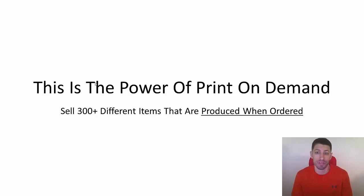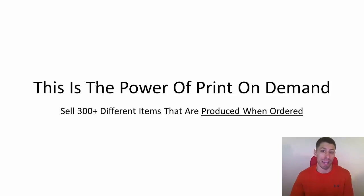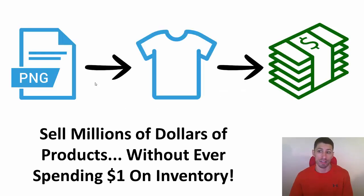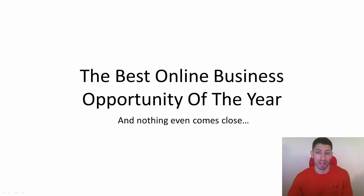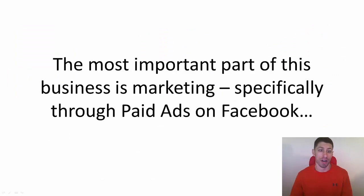You get to sell 300 different products that are produced when ordered. That's the print on demand part — these products are printed or produced once they're demanded, when they're ordered, which means you get paid first. You get to literally get paid for a product that doesn't exist. You just have this design file represented as a t-shirt in your store, and then it gets sold. That's the power of print on demand — definitely the best business opportunity of the year.